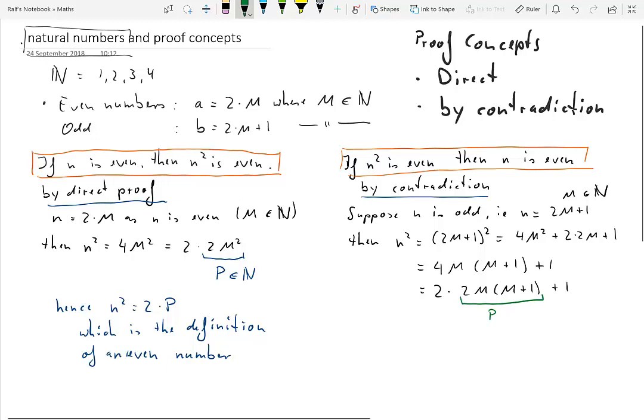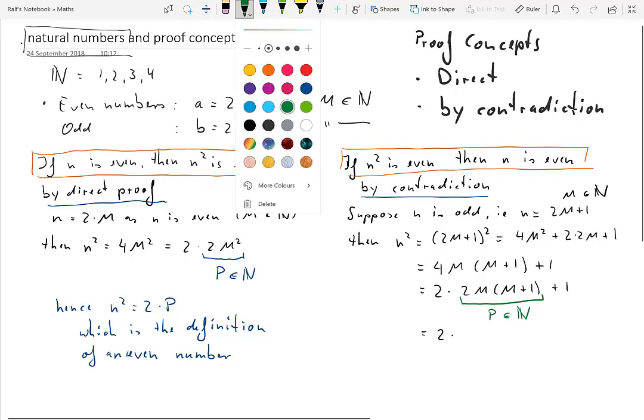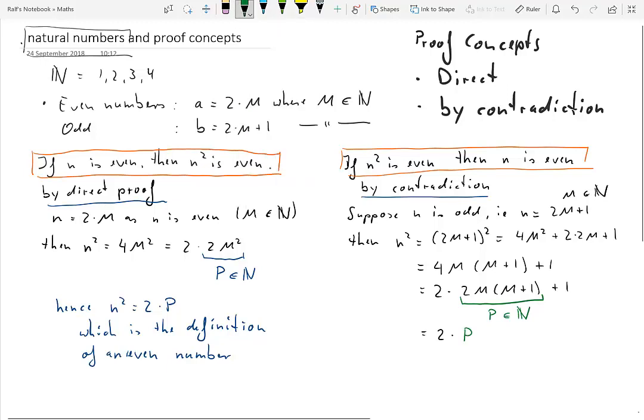Now what about p? m is a natural number. So m times m plus 1 is a natural number and 2 times that is a natural number. So p is going to be element of the natural numbers. That implies that n squared is 2 times p plus 1, where p comes from the natural numbers. And this is of course just the definition of an odd number.